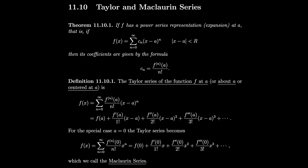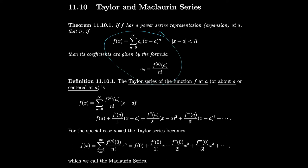So we have this theorem that says that if a function has a power series representation, then it must look like the sum of c_n times (x minus a)^n, where each coefficient c_n is the nth derivative at a of the function divided by n factorial. Notice this does not guarantee that a function can be represented by a power series — it just says that if it can be, then it must look like this. We'll have to verify that a function actually has a power series representation.